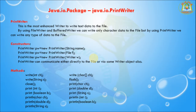PrintWriter can communicate either directly to the file or via some Writer objects. In the PrintWriter class there are different methods available: the write() method, the close() method which is used to close the file, the print() method which is used to write data into the file, println() which writes data and also adds a new line, and the flush() method which is used to flush the data into the file.